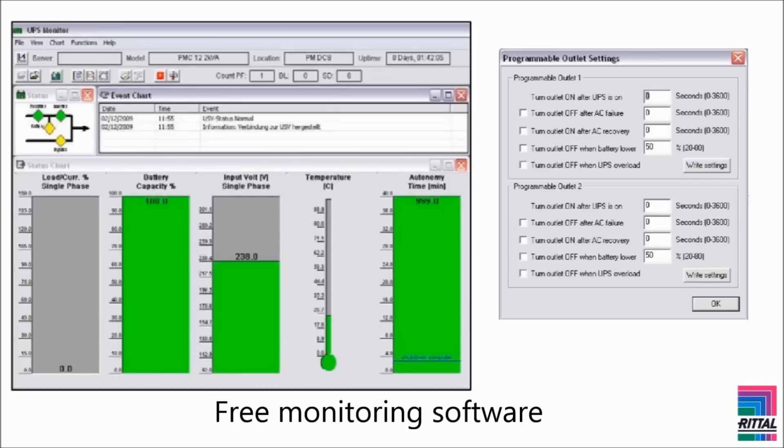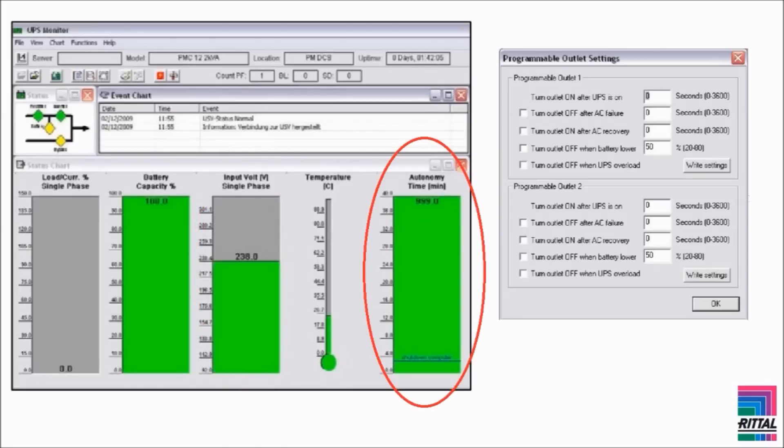A free monitoring software is provided. The UPS monitoring software can be used to configure the programmable outlets. It also features a graphical interface showing battery status, input and output voltage, expected autonomy time, and many more features.